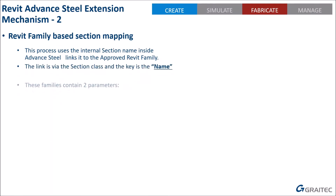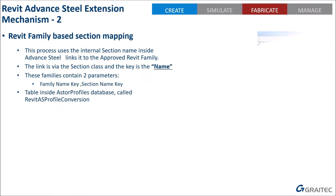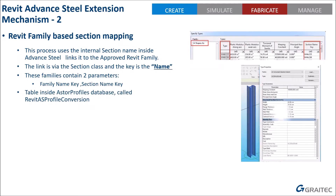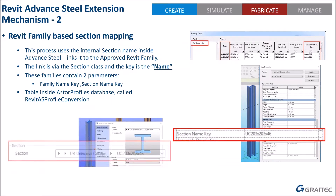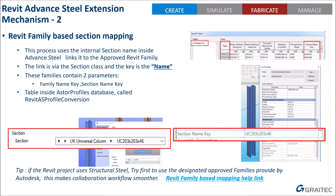The family-based section mapping was used in 2018–2019 versions. It used the internal name from Advanced Steel, transferred into the Revit file naming under the family. This method was designed and controlled by Autodesk using approved families — it worked well providing you had approved families, but wouldn't work with non-approved families and there was no way for the average end user to utilize the technology. Autodesk ceased doing this as of the 2020 version, though in 2018–2019 it was present and helped resolve many issues.